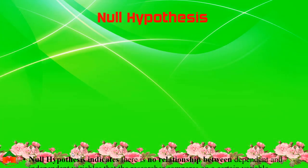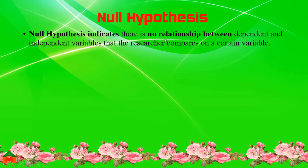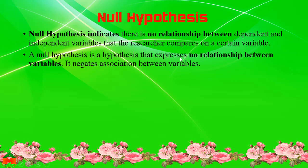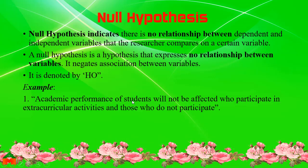What is Null Hypothesis? Null Hypothesis indicates that there is no relationship between dependent and independent variables that the researcher compares on a certain variable. A Null Hypothesis expresses no relationship between variables and negates association between variables. Generally, we denote Null Hypothesis as H0. Example: academic performance of students will not be affected by whether they participate in extracurricular activities or not — there is no effect in the academic performance.